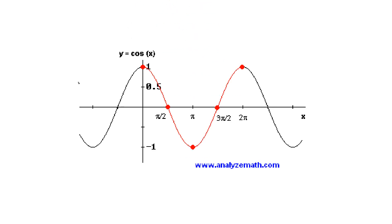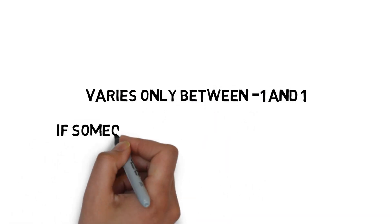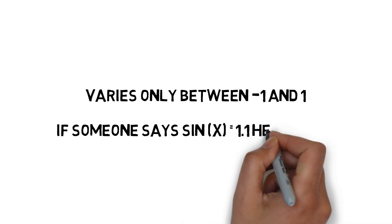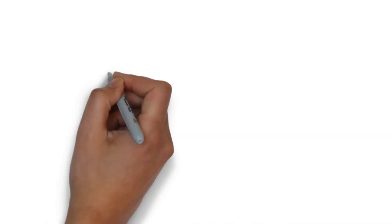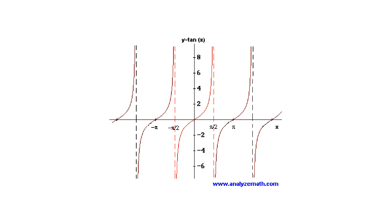Now, we have cosec. Cosec is the shape of a sin. So if you have a sin, cosec can use a sin.